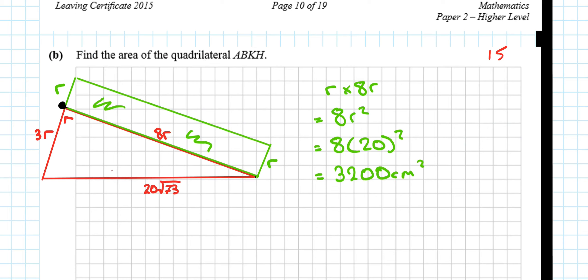The red bit is a triangle. We can either use a half AB sine C for a triangle, a half AB sine C for the area. Or, I can use a half base times the perpendicular height. If I refer to this as the base, and this is the perpendicular height, I'm absolutely flying. So, a half times 8r times 3r. I think that works out to be 12r squared. 12 times 20 squared is 4,800 centimeters squared.